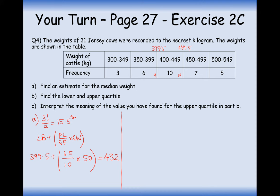For part B, the lower quartile: 31 divided by 4 is 7.75, so it's in the second group. Applying the formula, the lower boundary of this group is 349.5. We've already had 3 data points, so it's the 4.75th value into this group. That's 4.75 out of 6 data points in the group, times a class width of 50 (from 349.5 to 399.5), added onto 349.5. Calculating: 349.5 + (4.75/6) × 50 ≈ 389 kg.